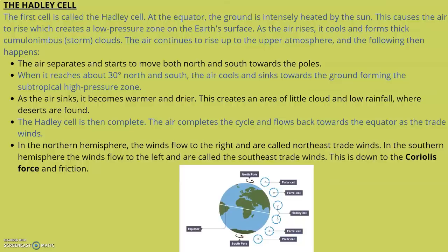In the northern hemisphere, the winds flow to the right and are called northeast trade winds. In the southern hemisphere, the winds flow to the left and are called southeast trade winds. This is due to the Coriolis force and friction.